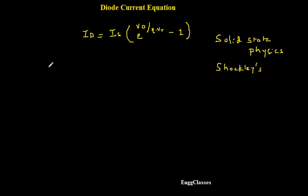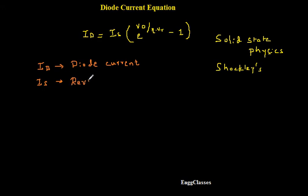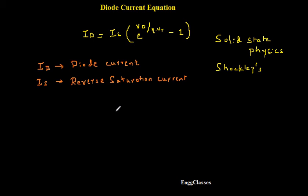So now let me write all the terminologies involved. Id is the diode current. Is is the reverse saturation current. It is called saturation current because during reverse biased condition, even though I increase the voltage, the current remains the same — it does not increase any further, it remains constant. Hence it is known as reverse saturation current.